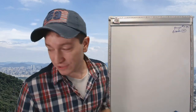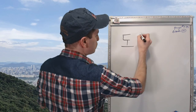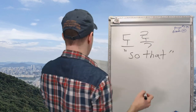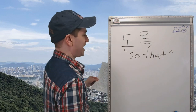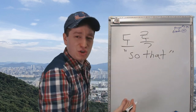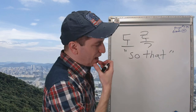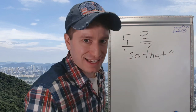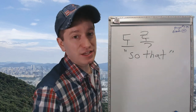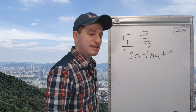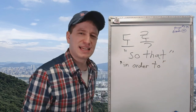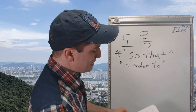Today we're going to be learning about the form 도록. The first way we're going to talk about is how 도록 means 'so that.' What I mean is: I studied a lot of Korean so that I could be a Korean teacher. You can also think of this as translating as 'in order to.'